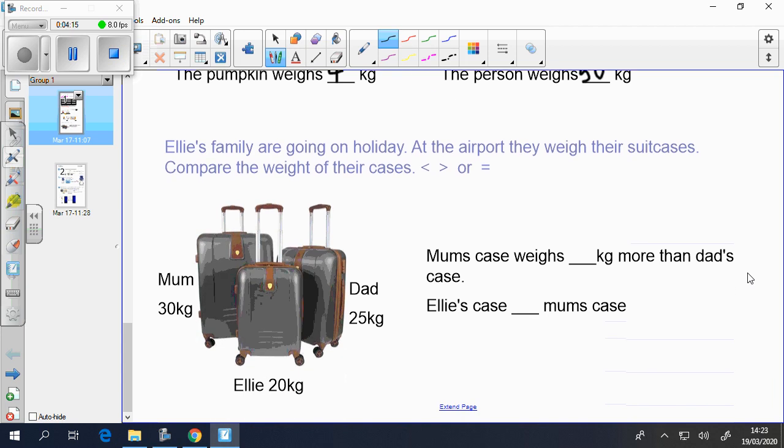Emily's family are going on holiday. At the airport, they weigh their suitcases. Compare the weight of their cases using the less than, greater than or equal to symbol. So, Mum's case weighs 30 kg. Ellie's case weighs 20 kg. Dad's case weighs 25 kg. Mum's case weighs something kg more than Dad's case. So you need to work out the difference here between Mum's and Dad's. And then Ellie's case and Mum's case, you're just comparing both pieces. And you're going to pop a symbol in here. Pause the video now to have a go.